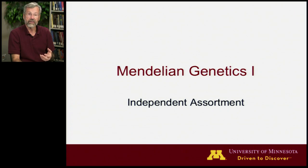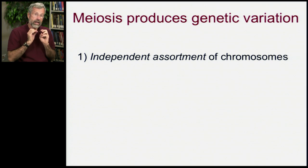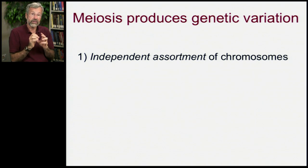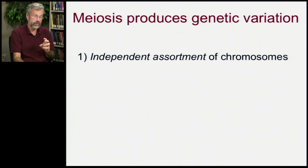Now let's look at Mendel's other great contribution to modern genetics. This is called independent assortment. Remember that meiosis produces genetic variation, and now we're going to look at this in more detail because we're going to be looking at what's called independent assortment of chromosomes.